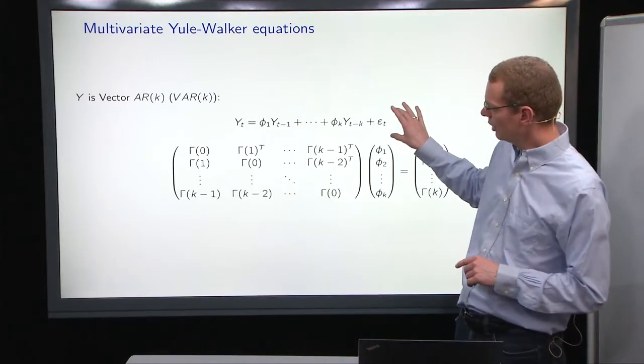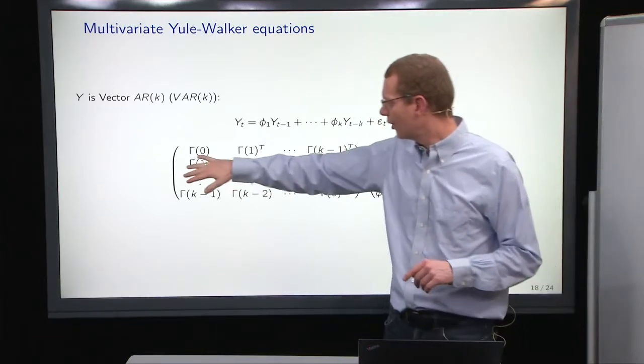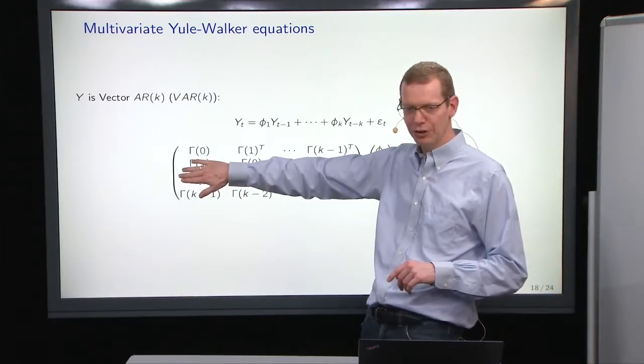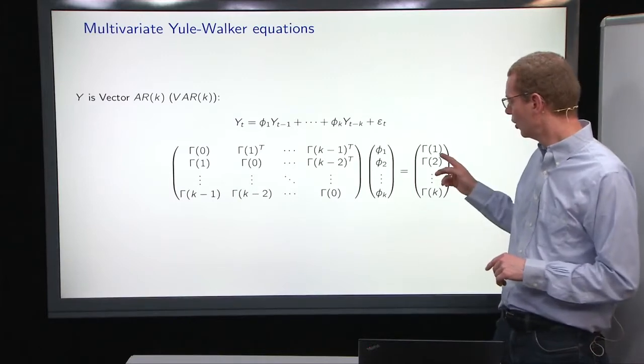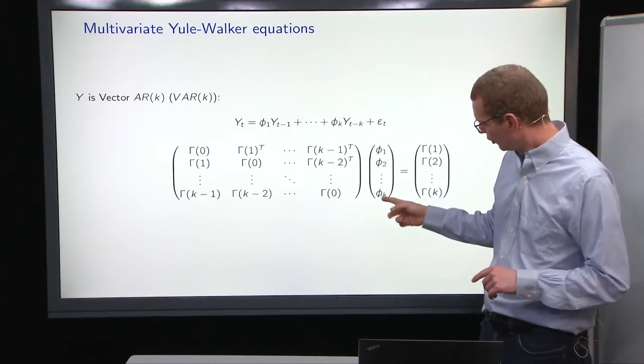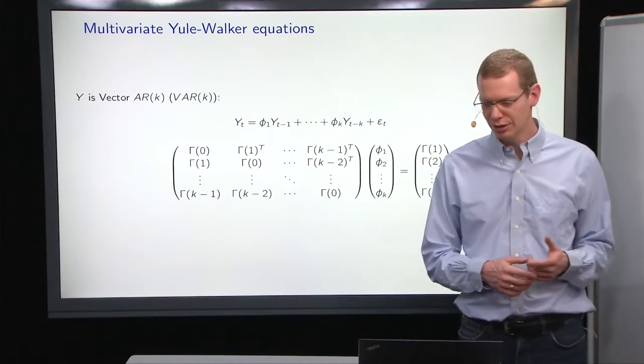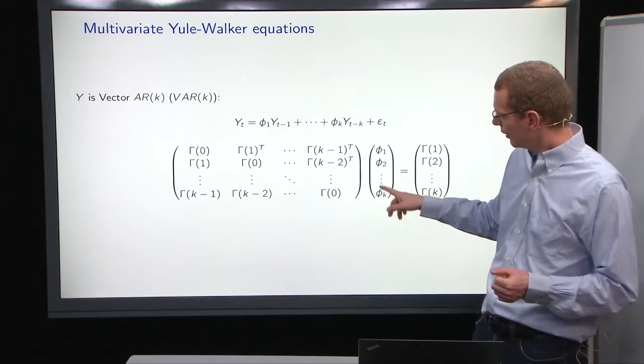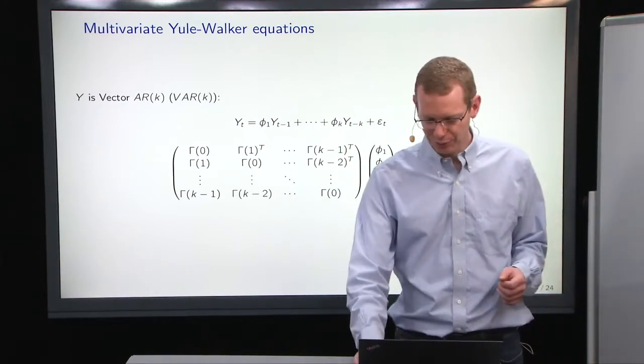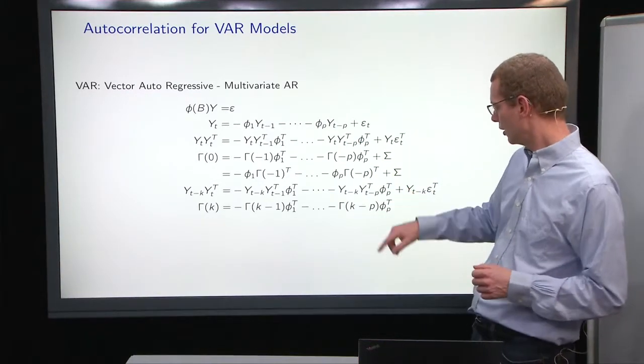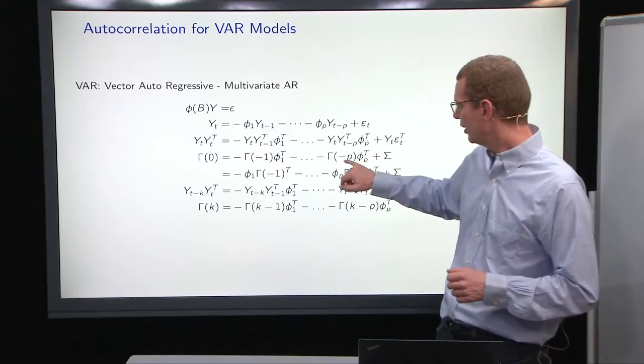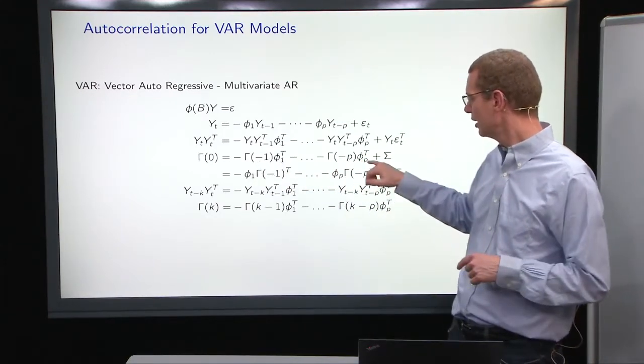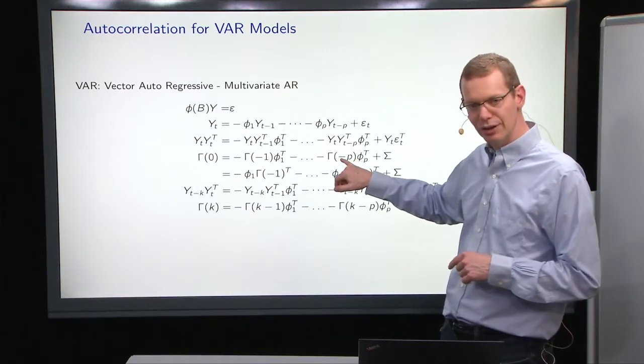Because when we look at the model here, then we can write up all these equations. The first one represents the variance equation up here for determining the coefficients here up to order k. Now, here we see that we transpose what came from the previous slide. We have the gammas here that are not transposed. We have the phi's on the right-hand side, but we have negative indices here.